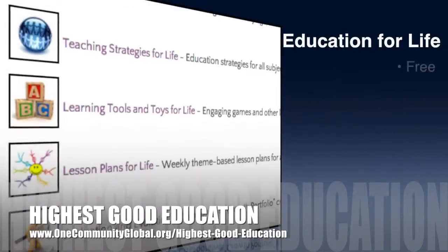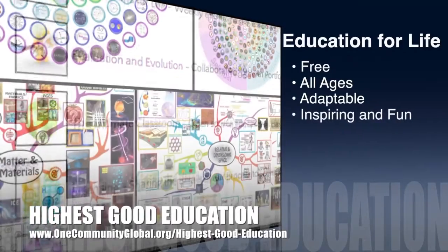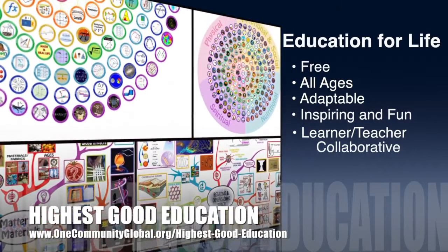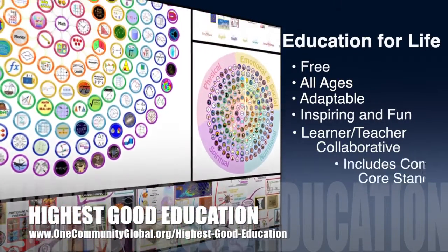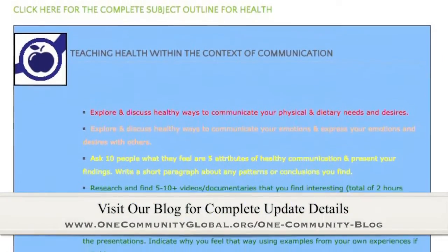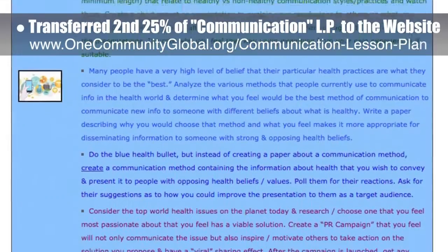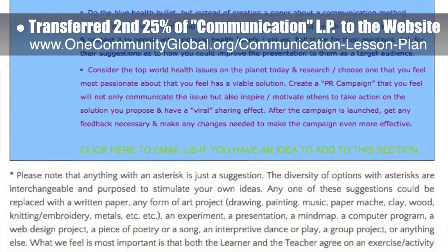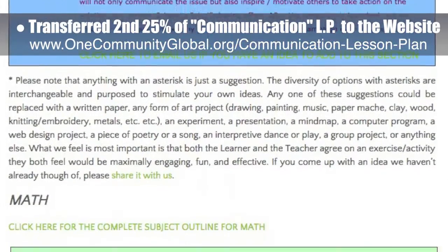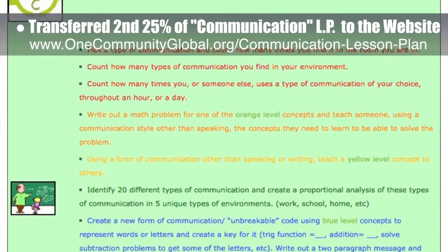Let's jump into the updates. OneCommunity's approach to highest good education is open source and free shared, designed for all age groups, adaptable to any schooling environment, inspiring and fun for all participants, a learner-teacher collaborative, and it includes U.S. Common Core standards. This week, the core team — which includes the Pioneer and Satellite members, plus those helping who don't wish to be individually acknowledged — transferred the second 25% of the content for the Communication Lesson Plan to the website. This means that this lesson plan, which teaches all subjects to all learning levels using the central theme of communication, is now 50% complete on our website.